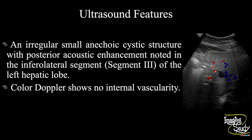So in summary, an irregular small anechoic cystic structure with posterior acoustic enhancement is noted in the infralateral segment, that is segment 3 of the left hepatic lobe. Color Doppler shows no internal vascularity. So this feature suggests it as a case of hepatic cyst.